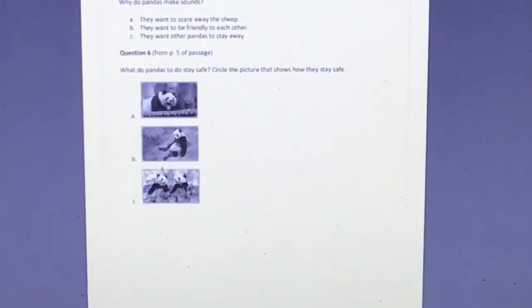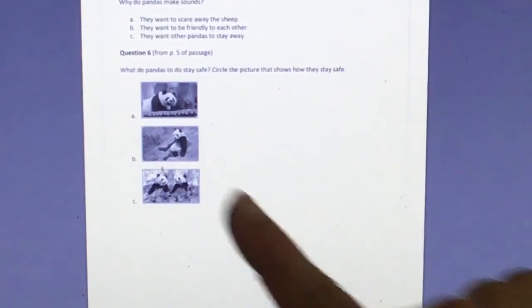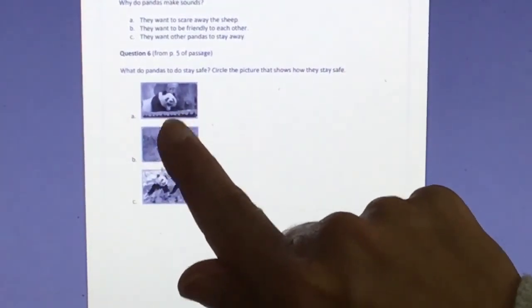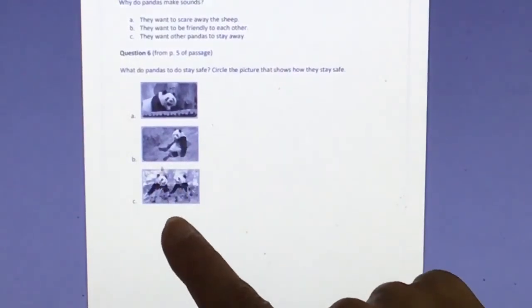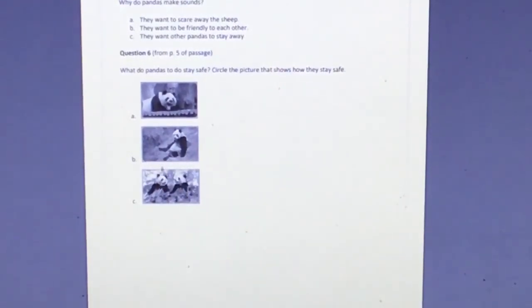And then question six is from page five. What do pandas do to stay safe? Circle the picture that shows how they stay safe. Is it A? Is it B? Is it C? If you need to look back, go back to page five.